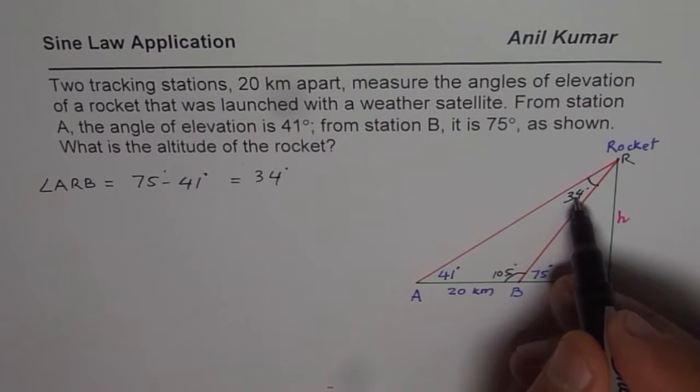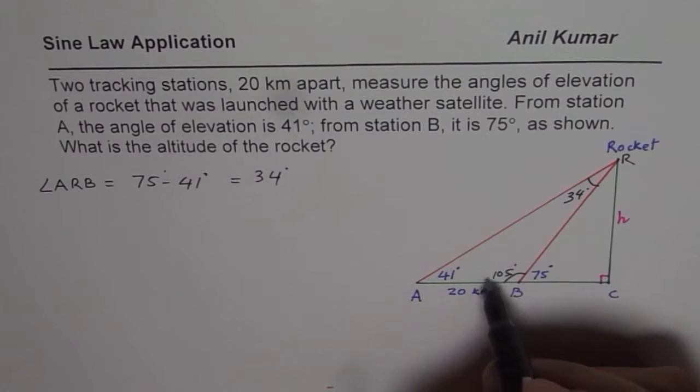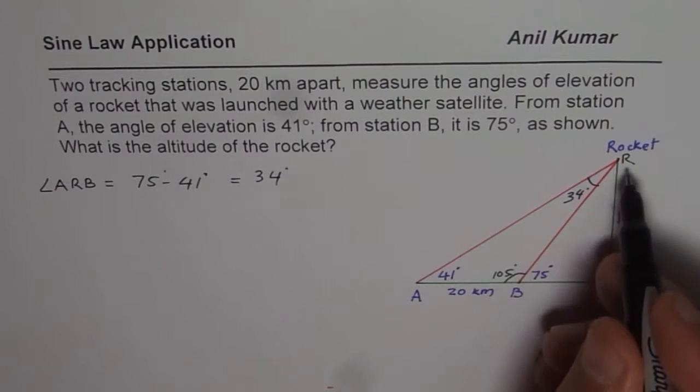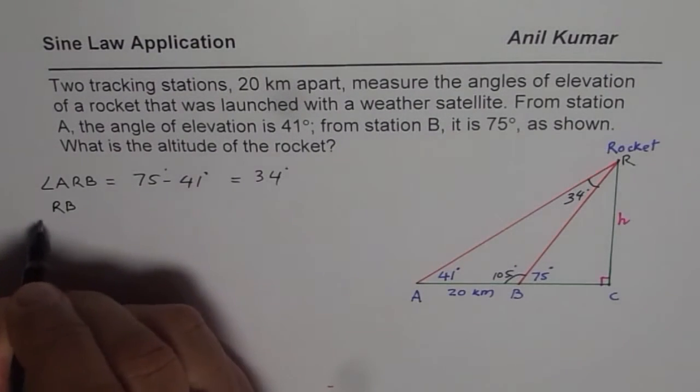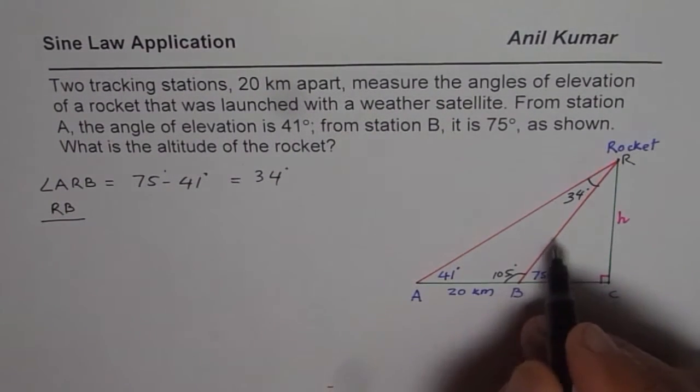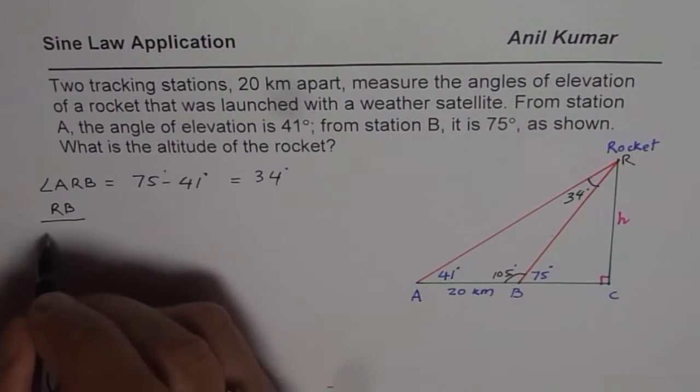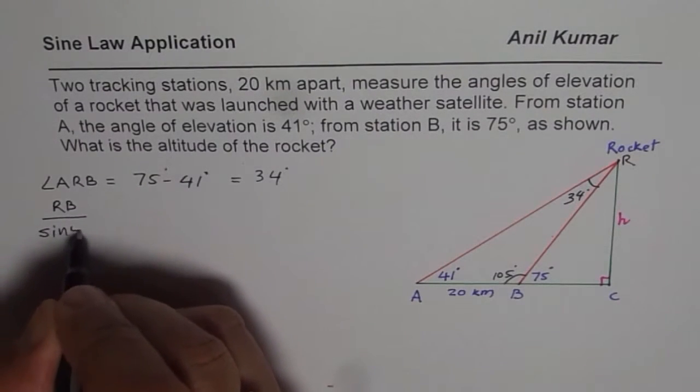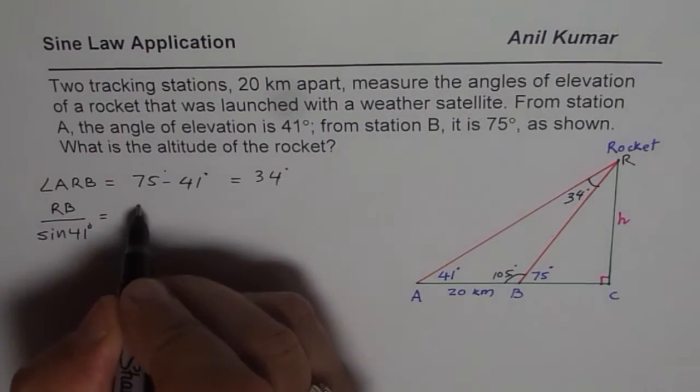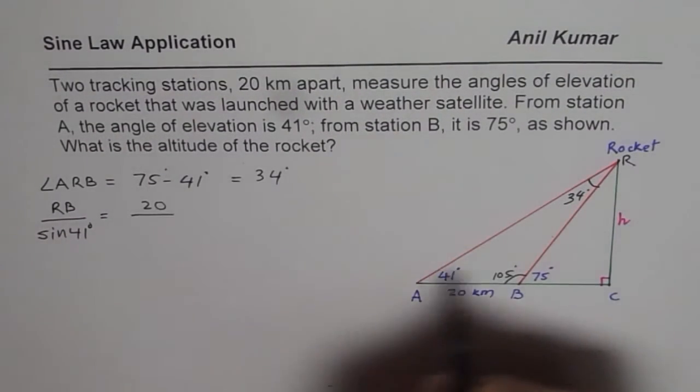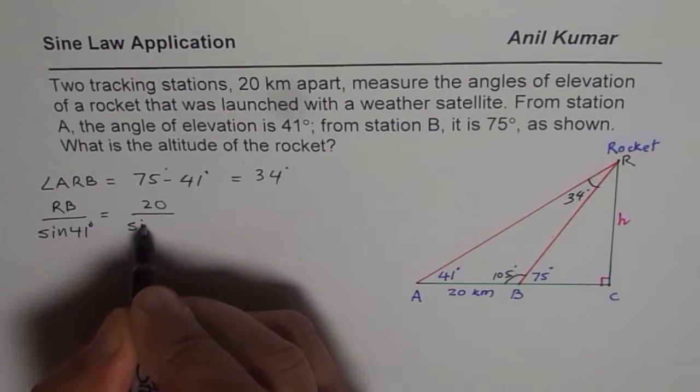Once you know this angle, you know one combination of angle and the side opposite, and so you can use sine law. We need to find RB, so we should write RB over sine of side opposite to RB, which is 41, should be equals to the combination given to us, length of 20 kilometers, divided by sine of 34.